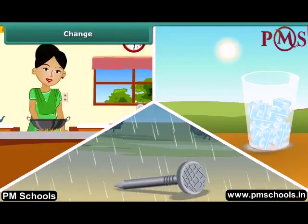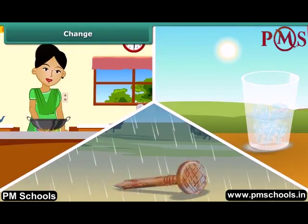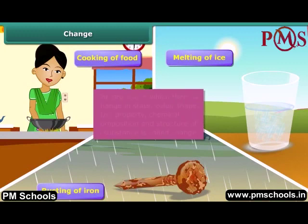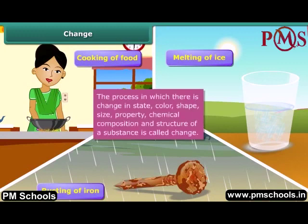We observe many changes. Some examples of changes in our daily life are: cooking of food, rusting of iron, and melting of ice. Change is a process in which the properties like state, color, shape, size, chemical composition, and structure of a substance is altered.